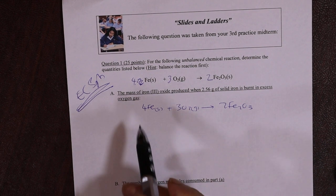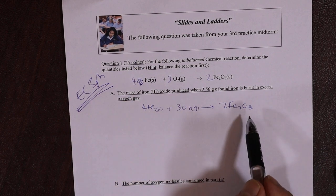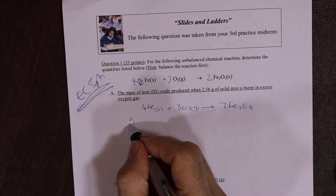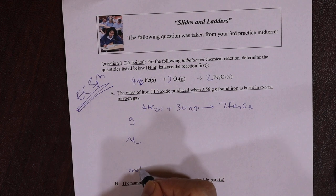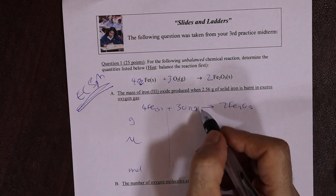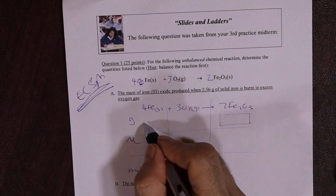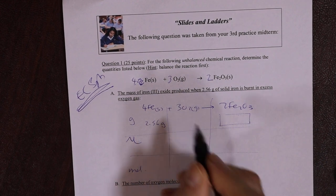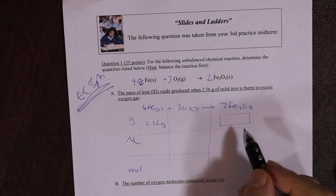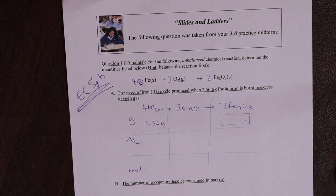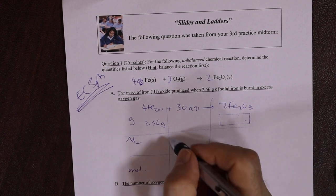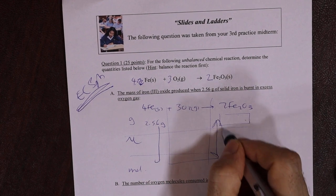So calculate the mass of iron three oxide produced. So grams, molecular weight, moles. Well, you can take it from there. That's your destination. You have that. So there's a hint, right? Get that number there. Now the challenging part, if the journey was to be written, it would be that, wouldn't it?